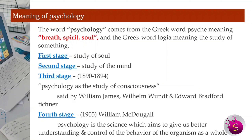The first stage is the study of soul. The second stage is the study of mind. In 1894, the third stage — psychology as the study of consciousness — was defined by William James. Wilhelm Wundt and Edward Bradford Titchener also called it the study of consciousness.